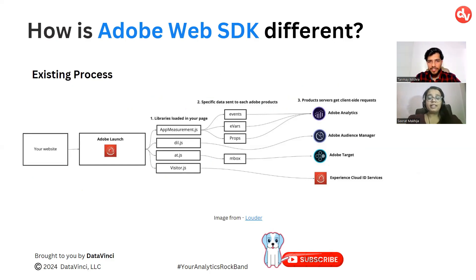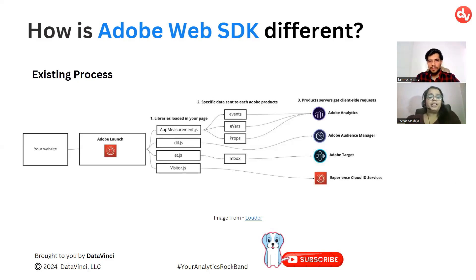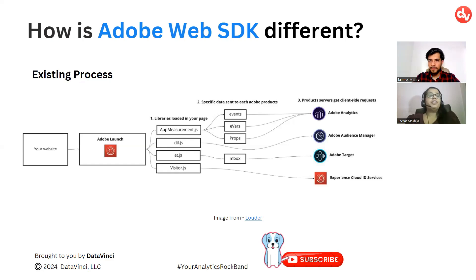Before we understand what new Adobe has given us, we need to understand what the existing process was. So we have the website, then we have Adobe Launch, then we have various libraries on the website like app measurement.js, dil.js, at.js, and visitor.js. Then we have specific data being sent to various Adobe products — like eVars and props are sent to Adobe Analytics. You can see that for four different platforms, we have four corresponding libraries.